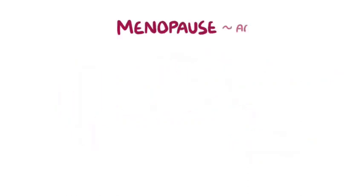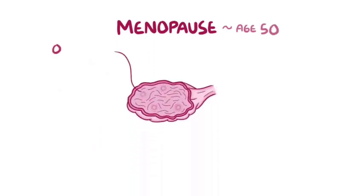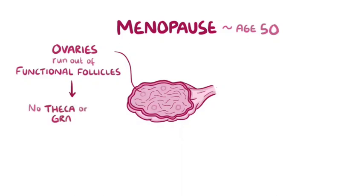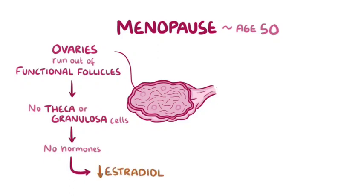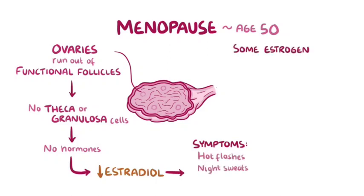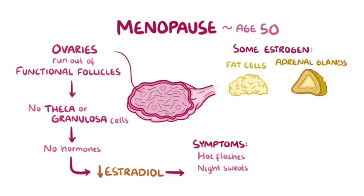Another plot twist occurs during menopause, which usually happens around age 50. At that point, the ovaries run out of functional ovarian follicles, so there are no theca or granulosa cells to produce any more hormones. This leads to a decrease in estradiol levels, accounting for many of the symptoms preceding menopause, like hot flashes and night sweats. But some estrogen is still being synthesized by the adrenal glands and the fat cells. However, these tissues produce estrone, so after menopause, estrone is the dominant kind of estrogen.